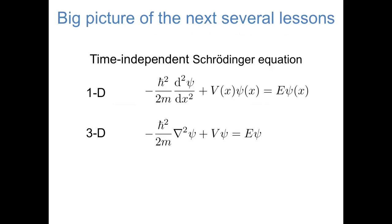I'd first like to give you a big picture of what the next several lessons are going to look like. We've already seen the time-independent Schrödinger equation, written on this slide in both one dimension and three dimensions. It consists of a kinetic energy operator applied to a wave function plus a potential energy operator applied to that same wave function, which equals a constant — the measured energy times the wave function. So far, we've just written the potential energy operator abstractly as the function V, but this function V is different in every chemical environment, and that's what makes it different to solve the Schrödinger equation from one system to another.